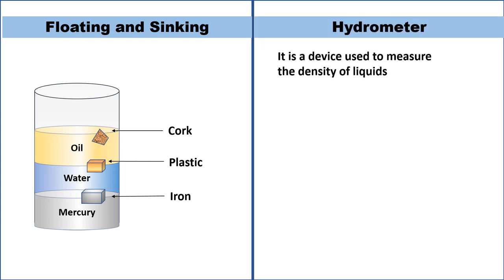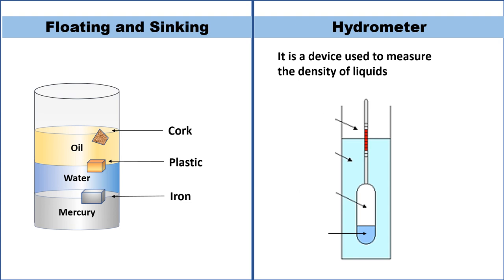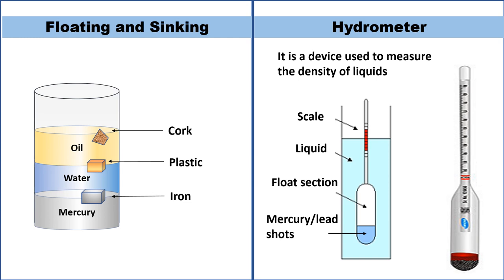Hydrometer is a device used to measure the density of liquids. It has a float section, a scale, and its bottom is filled with mercury or lead shots so it can stand vertical in the liquid. There are different kinds of hydrometers: one used to measure the density or purity of milk is called a lactometer, and one used to check whether a battery is fully charged is called an acid battery hydrometer.